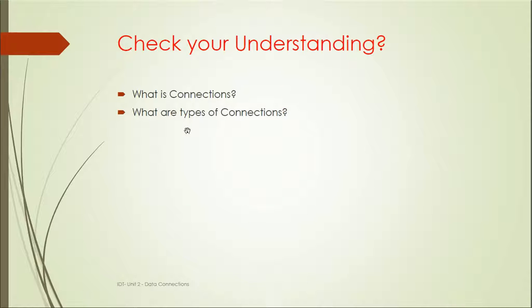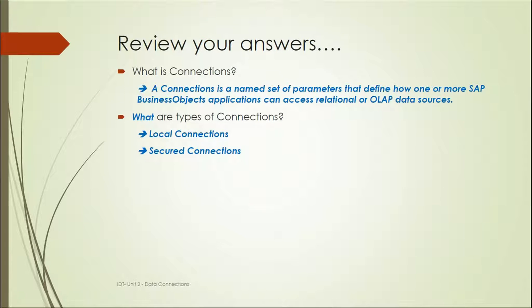That's all about connections — it's a simple unit. I will be showing practically how we can create connections, how we can connect to a relational database, how we can connect to an OLAP cube, and how we can build a data foundation and a business layer on these databases. To recap: a connection is a named set of parameters that defines how one or more SAP Business Objects applications can access relational or OLAP data sources, and the types of connections are local connections and secured connections.